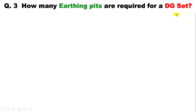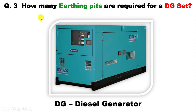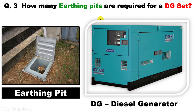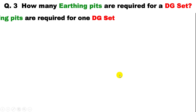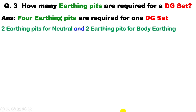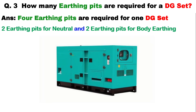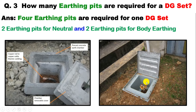The next question asks: for a DG set, how many earthing pits are required? DG set means diesel generator set — when electrical power supply is gone, we distribute power supply through the generator. The answer is: for a DG set, four earthing pits are required — two earthing pits for neutral and two earthing pits for body earthing. The neutral output must be connected to a neutral earthing pit.